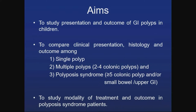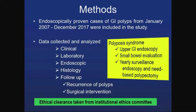Polyposis syndrome was defined as five or more colonic polyps and/or small bowel and upper GI involvement. Multiple polyps were defined as two to four colonic polyps. We also studied modality of treatment and outcome in polyposis syndrome patients.